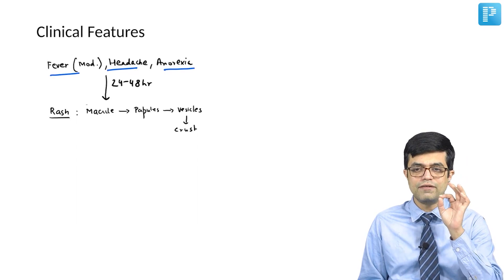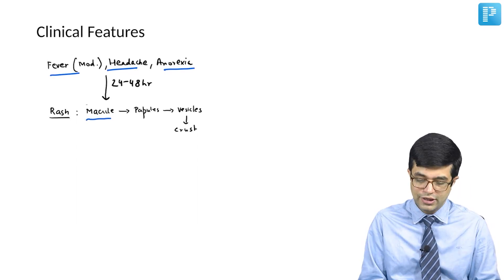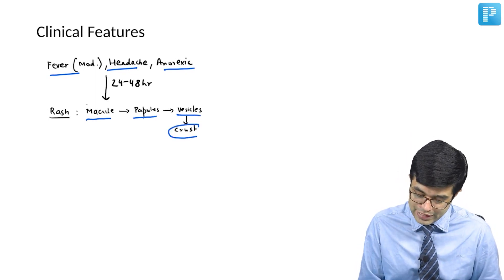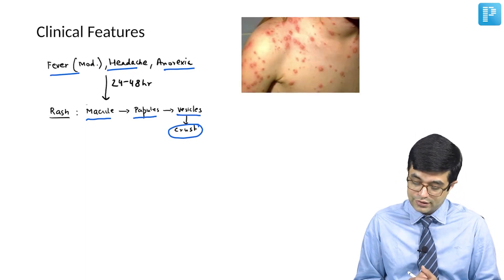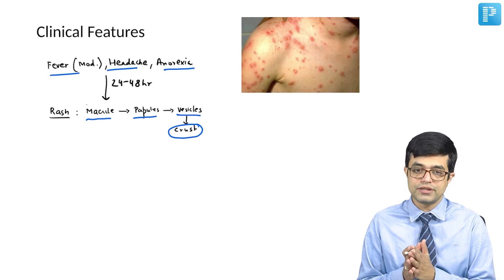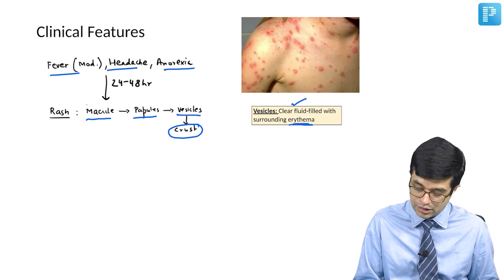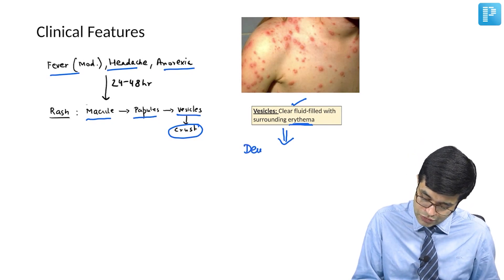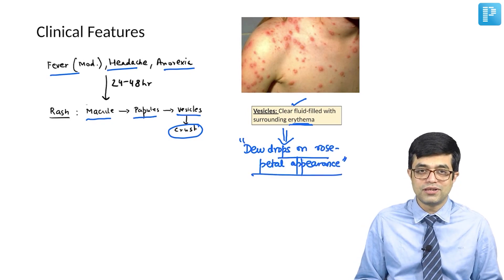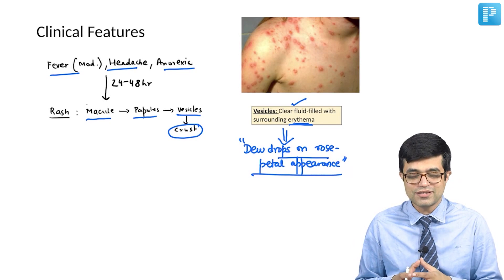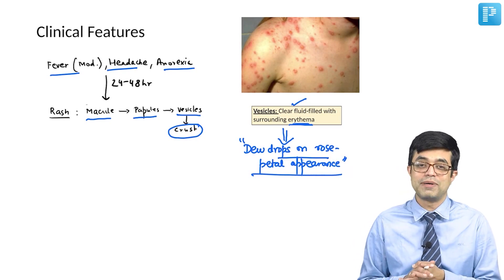The rash progresses in a very typical manner. Initially there is a macule, which in a few days turns into a papule, then forms a fluid-filled lesion called a vesicle, and eventually it heals by crusting. The vesicles are filled with clear fluid with surrounding pink-red erythema. This description of vesicles given in textbooks is the 'dew drops on rose petal' appearance.